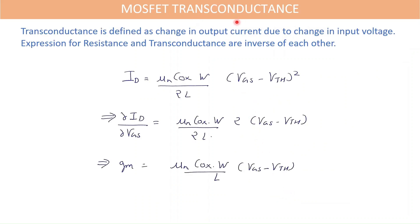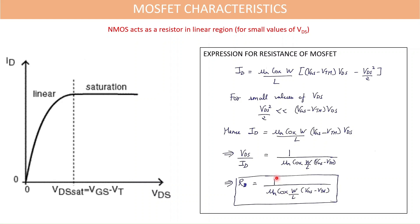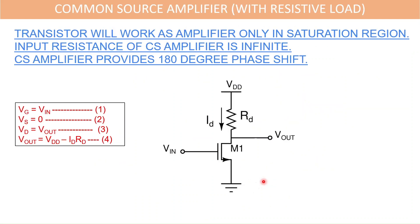Similarly, if we want to obtain the transconductance, it is defined as the change in output current due to change in input voltage. We take the expression for drain current in saturation region and differentiate it with respect to VGS to get GM. So delta ID with respect to delta VGS gives you the GM value. Note that the expression for GM is analogous but opposite to resistance — resistance applies in the linear region and GM in the saturation region.